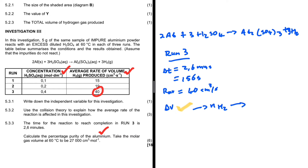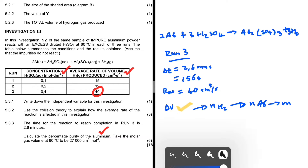From the moles of hydrogen gas, we can find the moles of aluminium. From the moles of aluminium, we find the mass, and from the mass we find the percentage purity. You have to have your entire plan laid out before you even calculate the first thing.